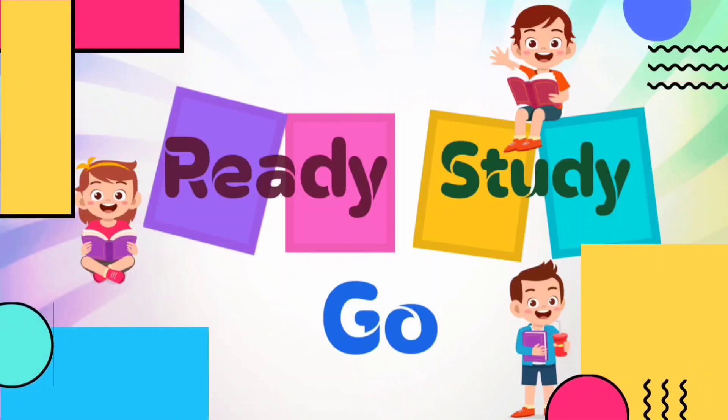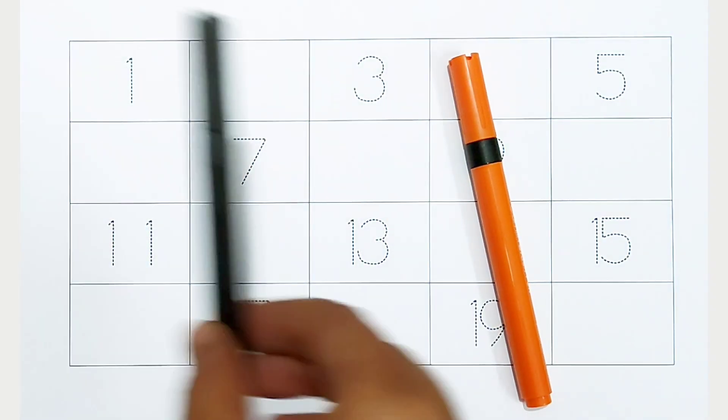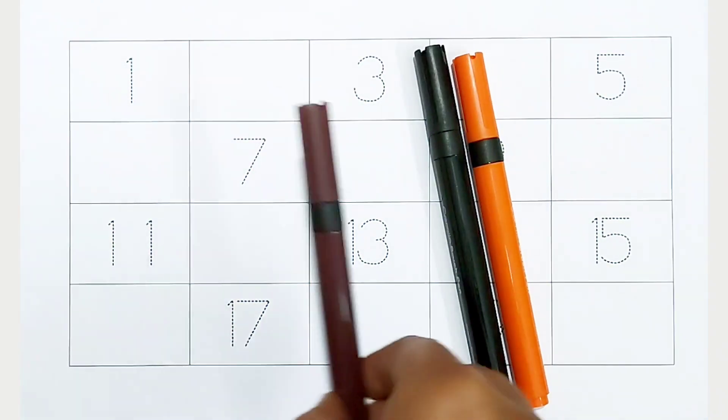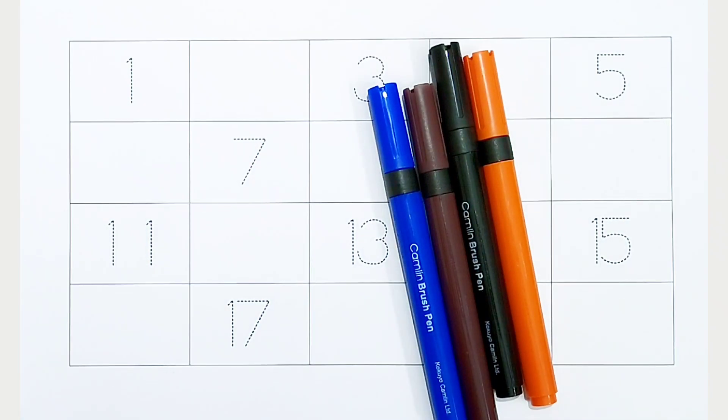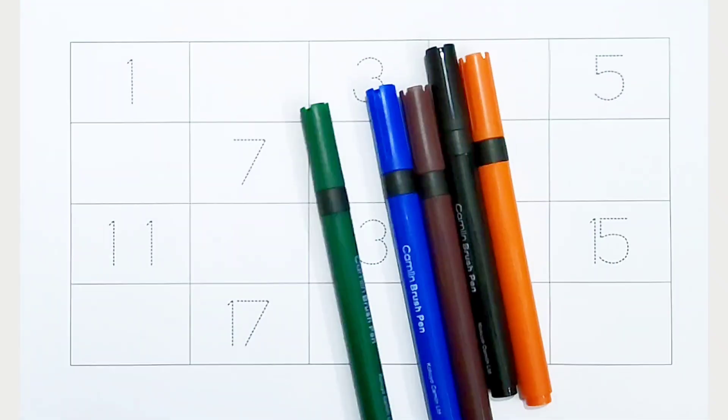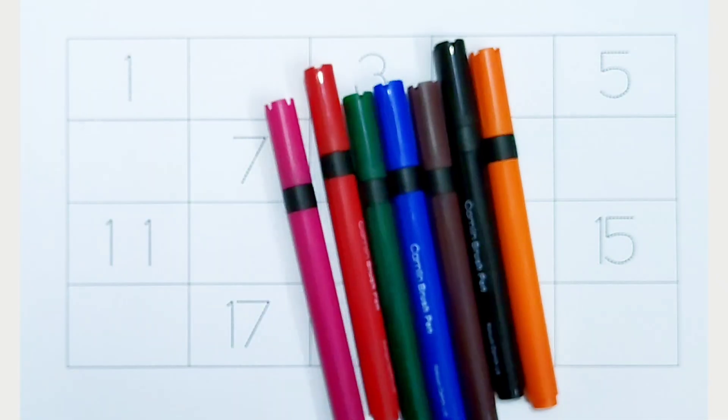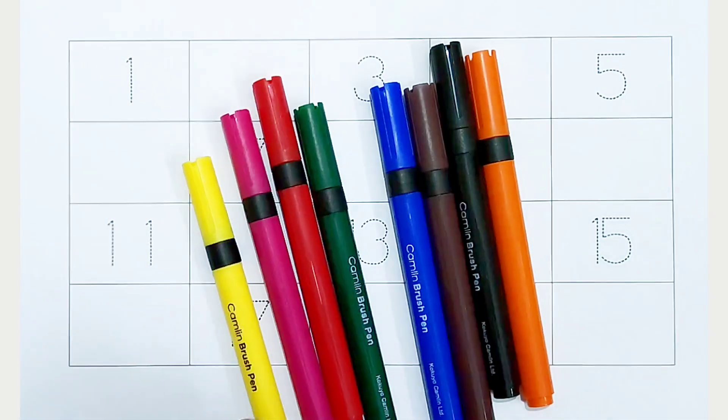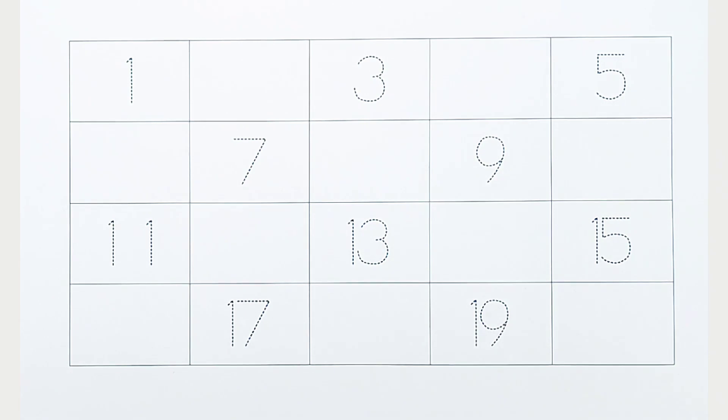Ready, study, go. Orange color, black color, brown color, blue color, green color, red color, pink color, yellow color. Hi kids, today we can learn the numbers from 1 to 20.